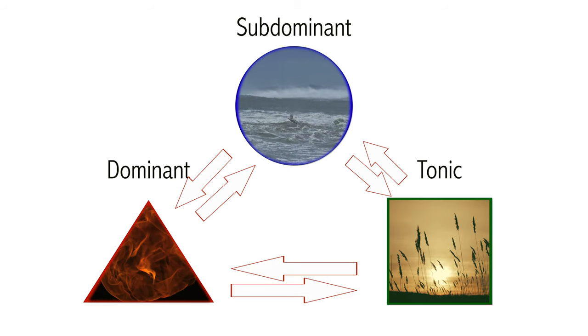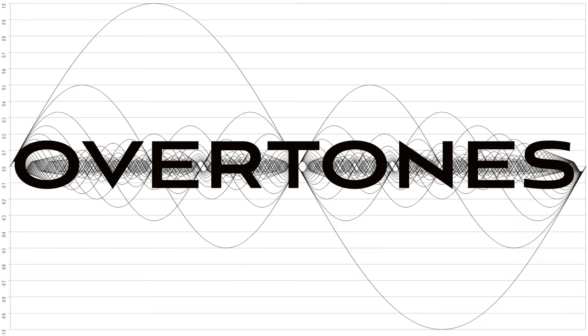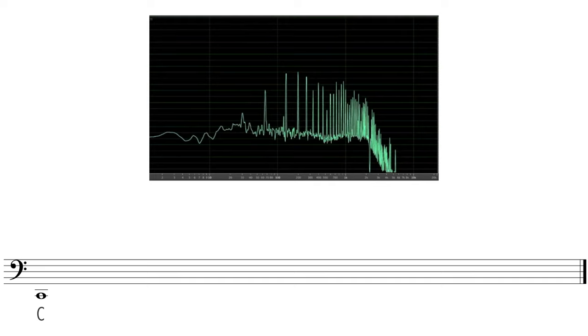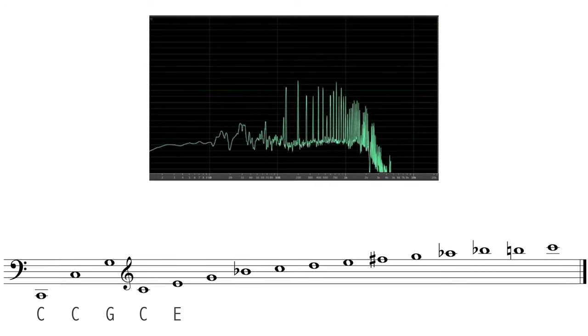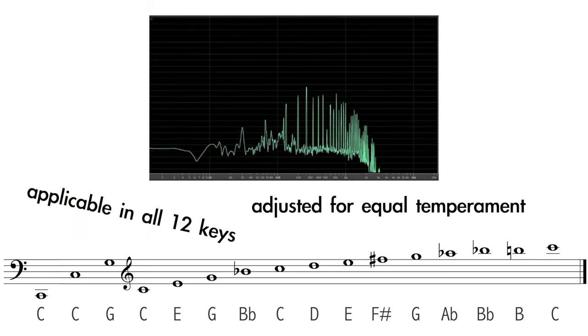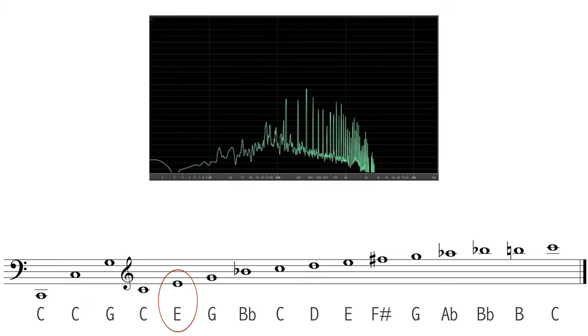So why does this happen? Let's talk overtones. When we hit the note C, we're not only hearing that note, but a number of overtones. The first four overtones after this fundamental are C, G, C, and E.